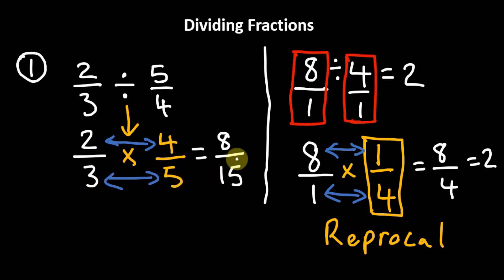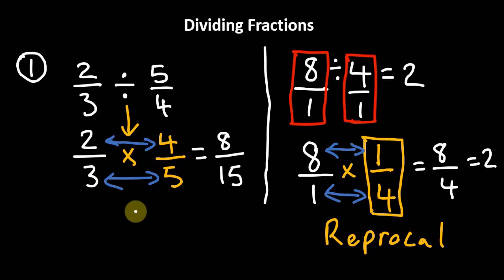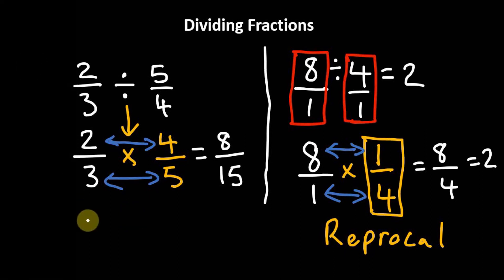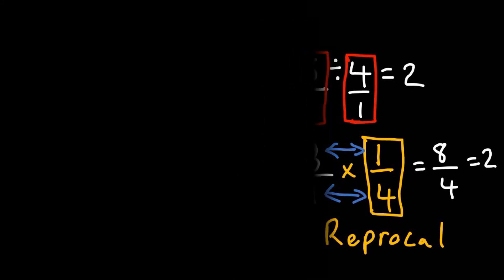We multiply the numerators together and the denominators together: 2 times 4 is 8, divided by 3 times 5, which is 15. So two thirds divided by five quarters equals eight fifteenths. Now, some of you might be wondering: what if you had mixed fractions? Let's look at a question like that right now.